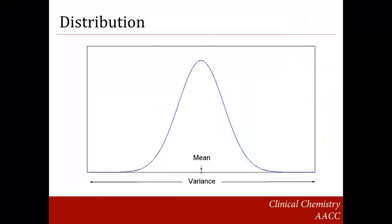Statistical distributions can be used to predict the probability characteristics of certain applicable real populations. There are several different statistical distributions. The one shown here is a normal distribution. It has a nice bell-shaped curve. The mean of the normal distribution is at the center of the curve. The normal curve is symmetric around this mean value. The variance of the distribution measures the spread of the data making up the distribution with respect to the mean value.